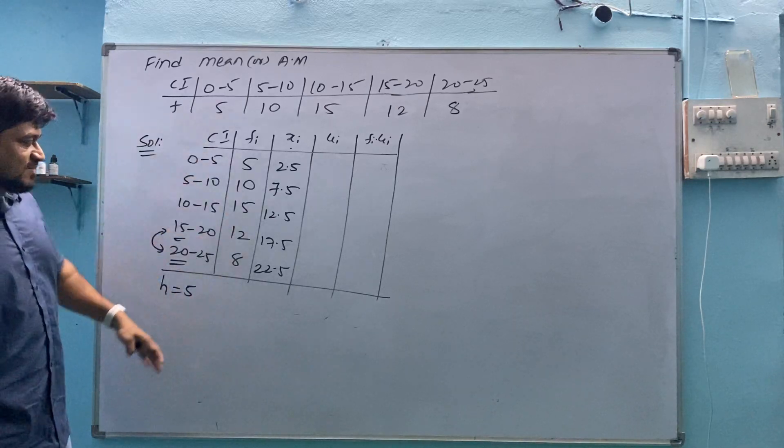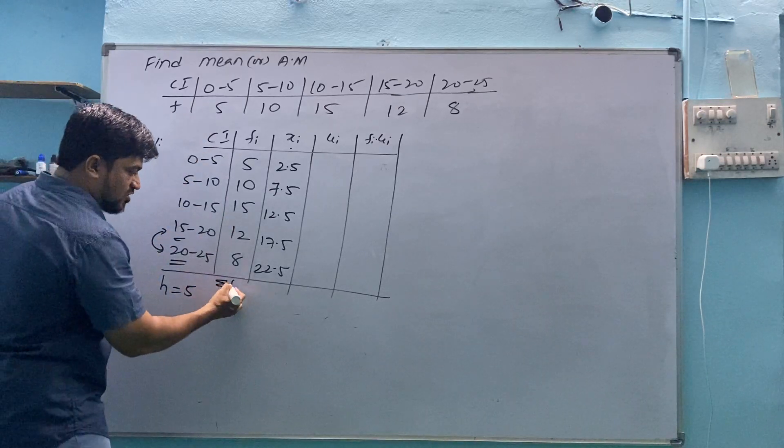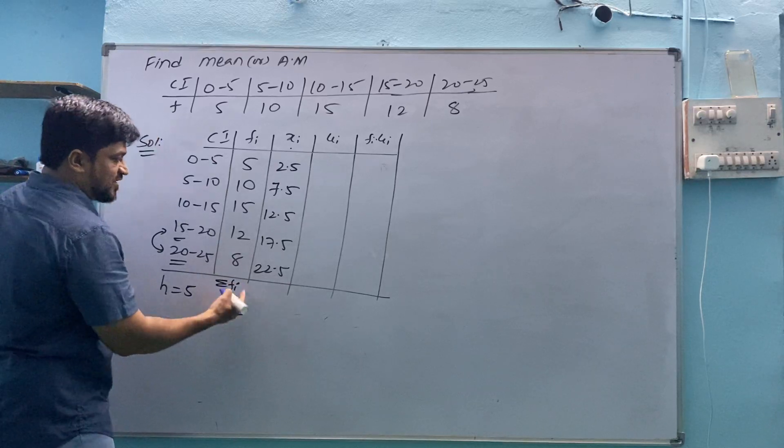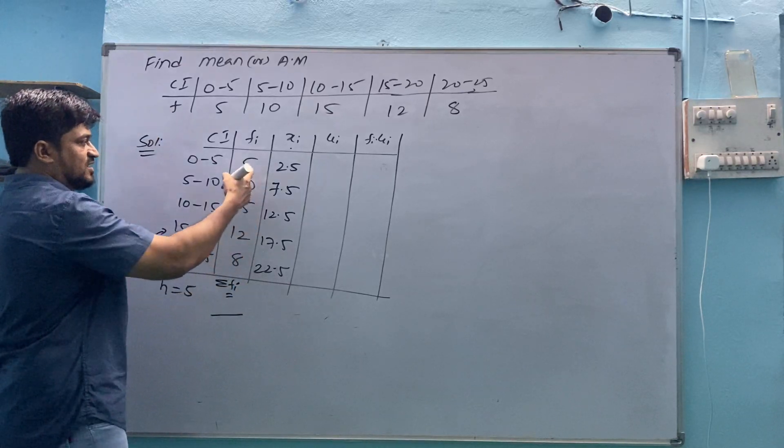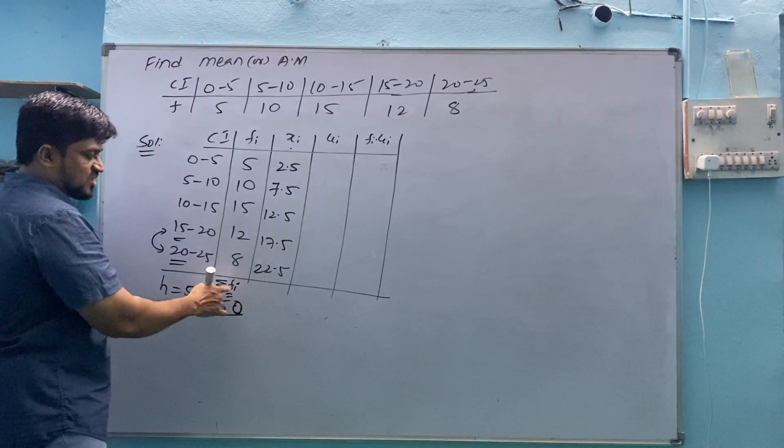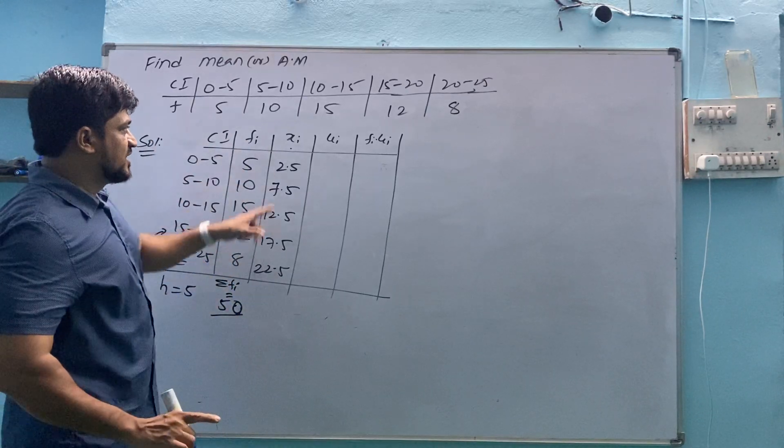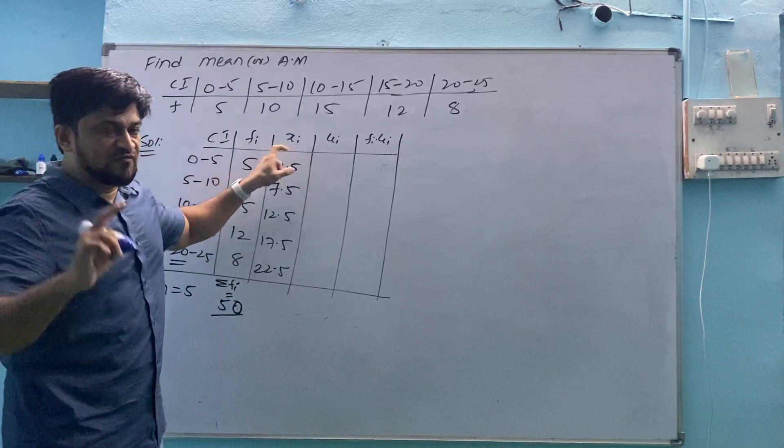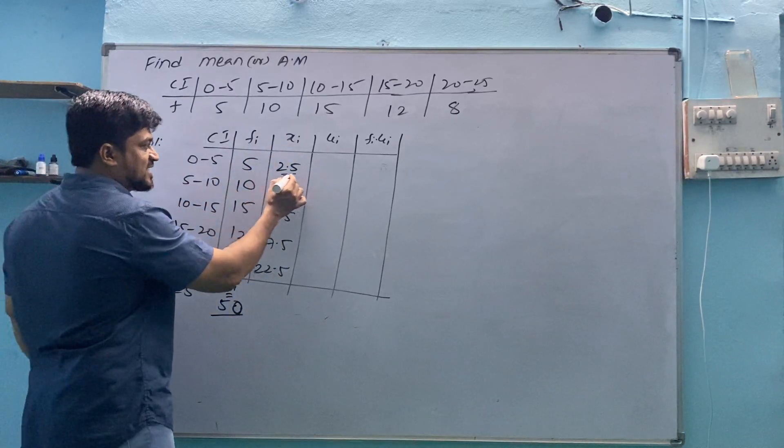Don't subtract 15 minus 20, no negative values you will get in this mean question. Sigma Fi means submission of this frequency. The values are 5, 10, 15, 12, 8. Total is 50, so summation Fi equals 50 means total of Fi.